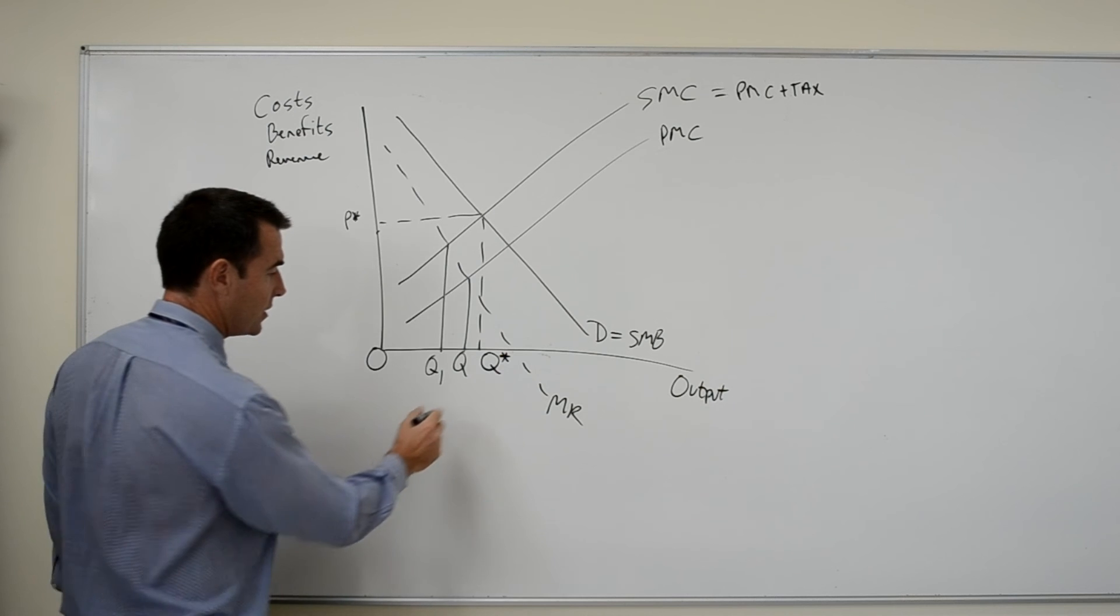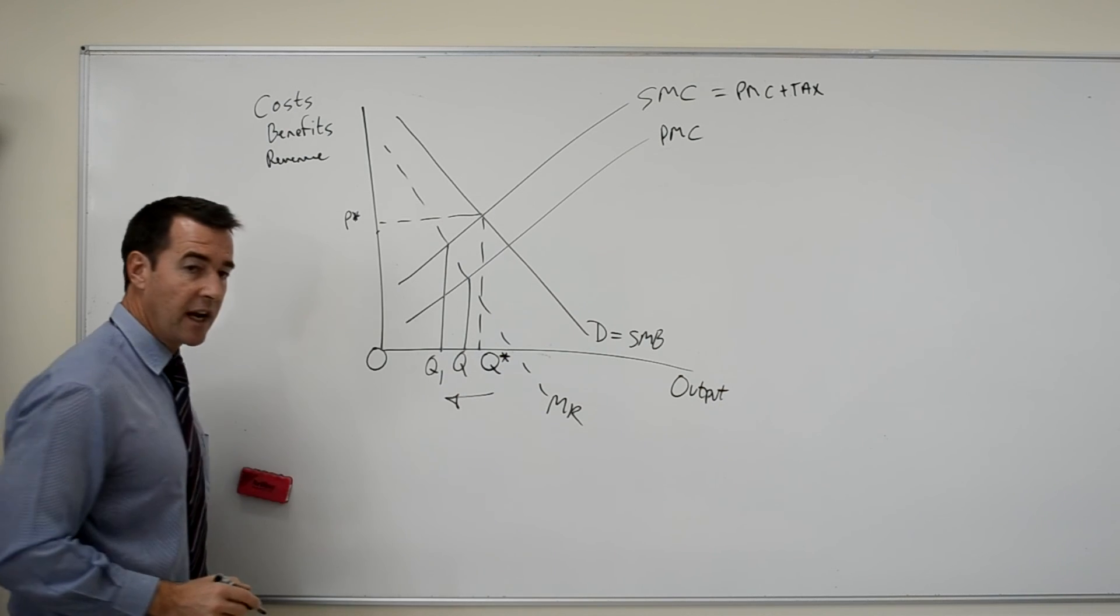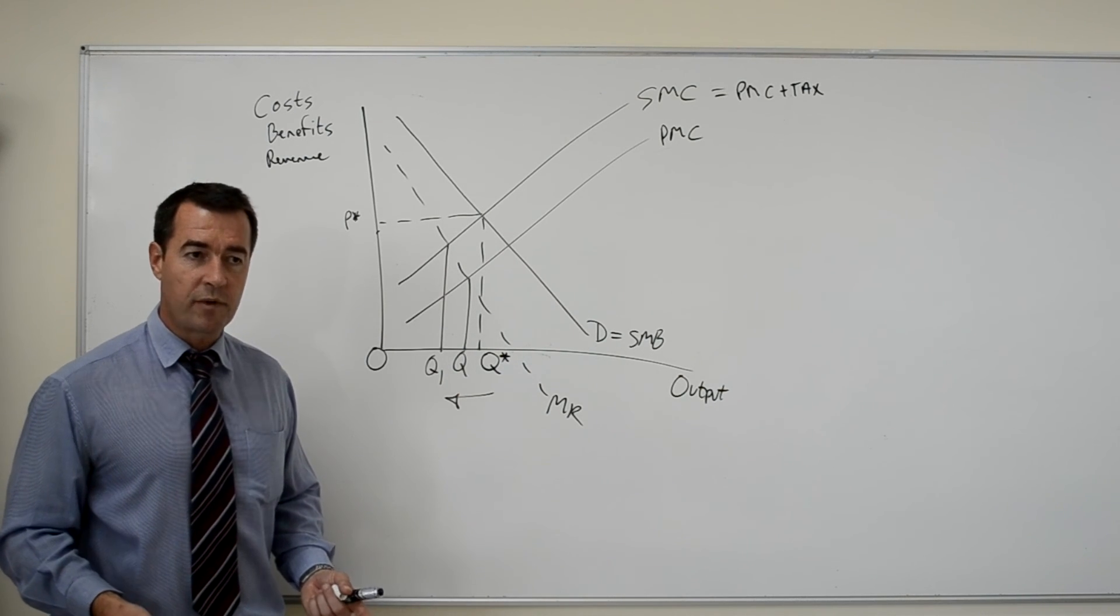So, what we notice is that as a result of the pollution tax, we move further away from the socially optimum output level.